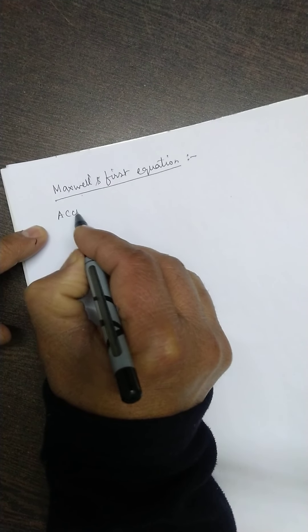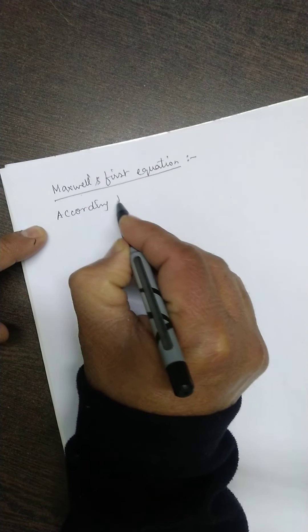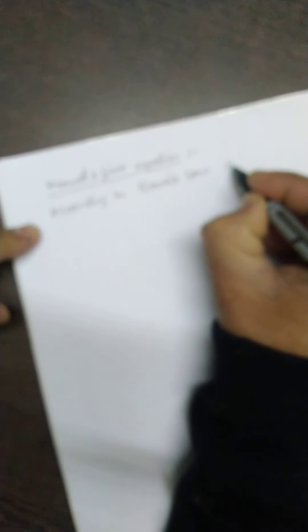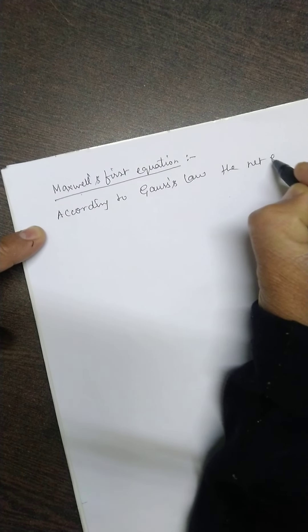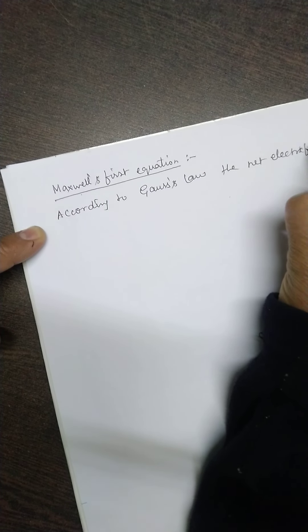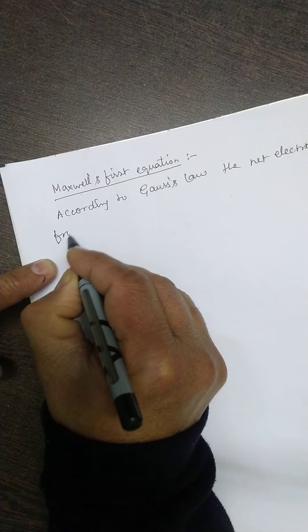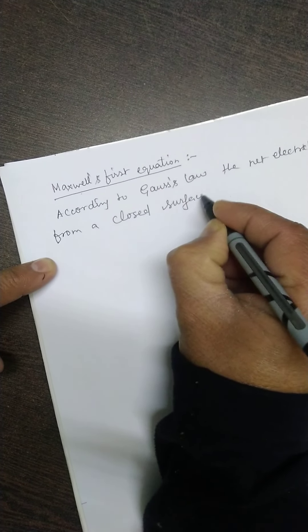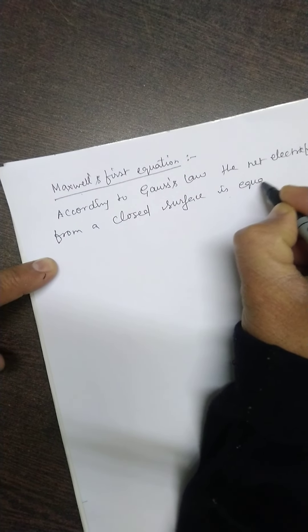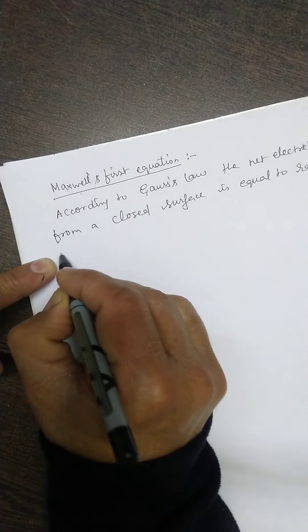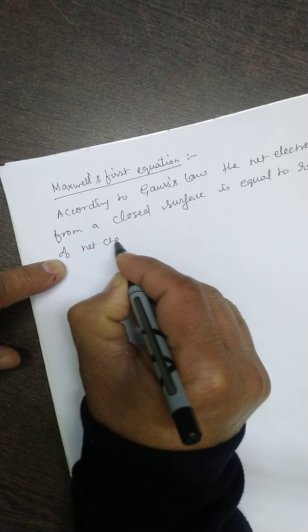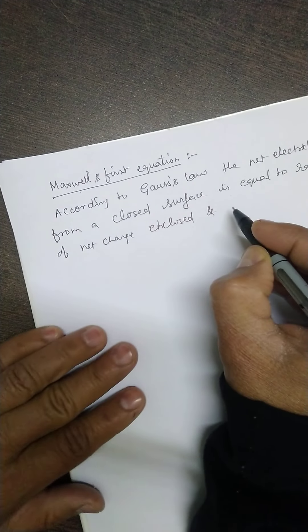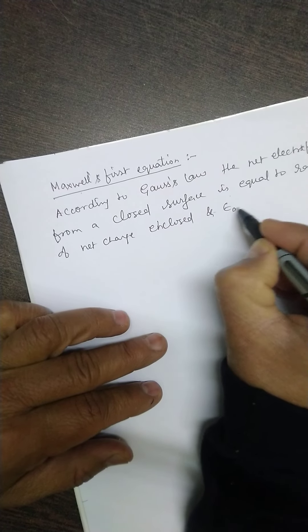You know, according to Gauss's law, the net electric flux from a closed surface is equal to the ratio of net charge enclosed and the permittivity of vacuum, that is epsilon 0.